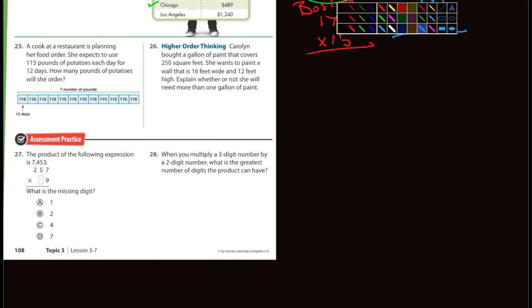Problem 25 is 115 times 12, you can do that. Problem 26: Carolyn bought a gallon of paint that covers 250 square feet. She wants to paint a wall that's 16 by 12. Let's draw ourselves a wall, it's 16 feet wide by 12 feet. I want to point out that little mark means feet.